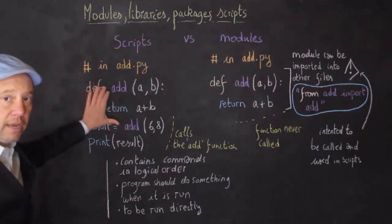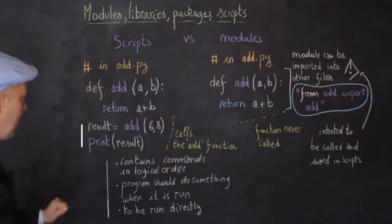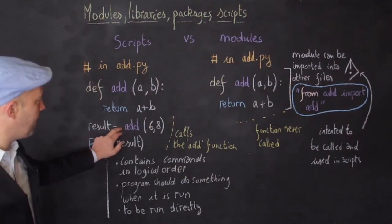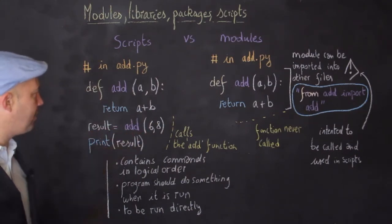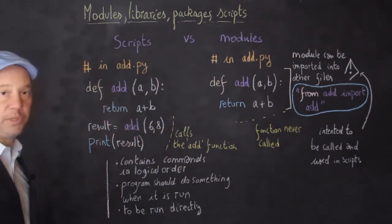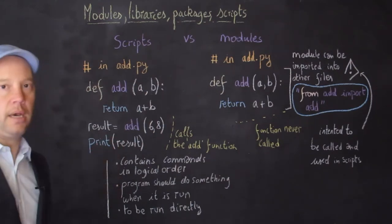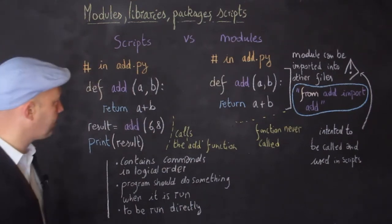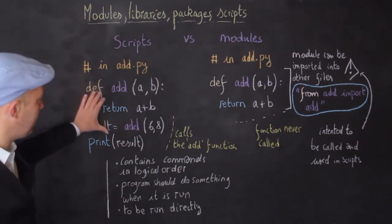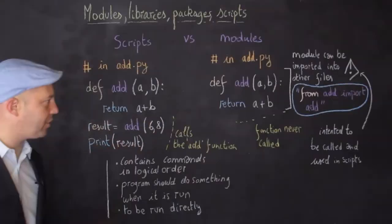The code here that you have on the left, which is a script, has actually two additional commands. The first one is to create a variable that will hold the value that is obtained by calling the function add that we just defined. And then the second, it will print that value of that variable called result. So clearly here, I have pieces of lines of codes and then I'm doing something in addition to it. When it is run, something will happen and it will actually return 14.